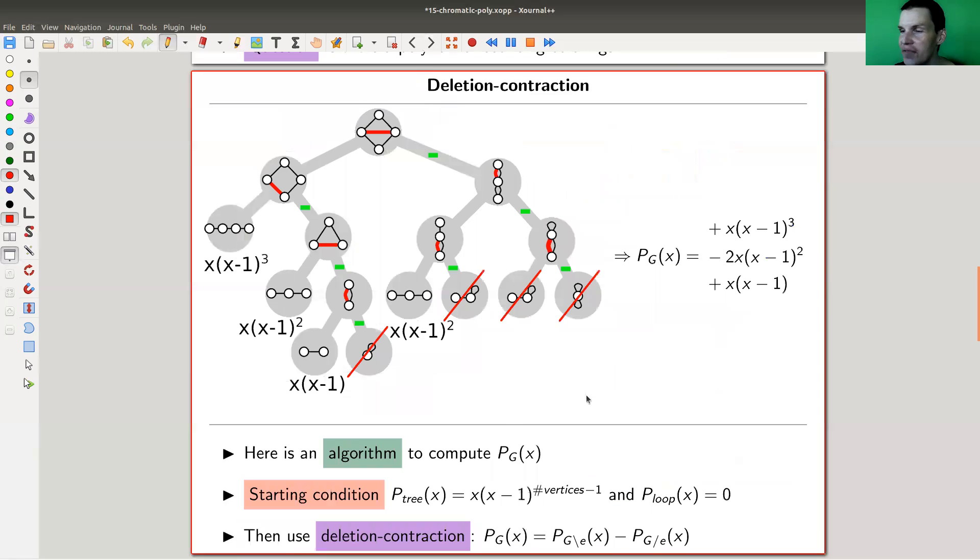And you could compute that pretty easily by the deletion-contraction algorithm, and it works as follows. So let's say you want to compute the polynomial associated to this graph. So you pick any edge you want, doesn't depend on the choice of your edge,